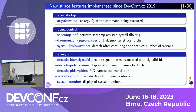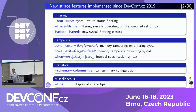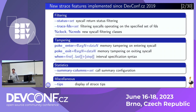There are several groups of features: those that affect the tracing process itself, features that are about the tracing output — what you'd like to see — a few features about filtering what you don't like to see, and a few features about tampering — how you'd like to change what you see. Also, one summary option, and one funny option that makes strace show you some tips.